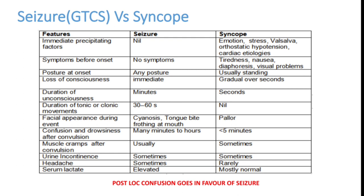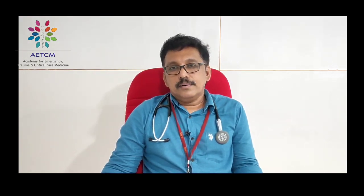An important investigation to differentiate seizure from syncope in the emergency room is the lactate level. Seizure activity involves muscle activity that increases anaerobic metabolism, so you get elevated lactate in GTCS, whereas lactate is not elevated in a syncopal attack. To summarize: post-ictal confusion is a classical feature of seizure; immediate regaining of consciousness is classical for syncope; and elevated lactate differentiates GTCS from syncope.